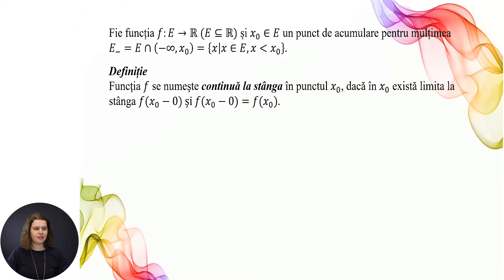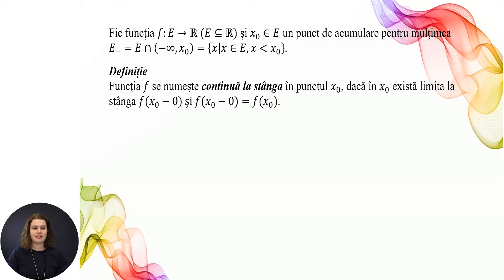Fie funcția f definită pe E cu valori în R. E este o submulțime din R, și x₀ care aparține lui E, un punct de acumulare pentru mulțimea E⁻, care este egală cu E intersecție cu intervalul (−∞, x₀), adică toate valorile lui x, x aparține lui E și x este strict mai mic decât x₀. Funcția f se numește continuă la stânga în punctul x₀, dacă există limita la stânga f(x₀ − 0) și aceasta este egală cu valoarea funcției în punct, f(x₀).